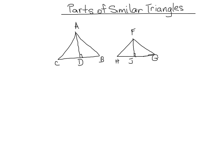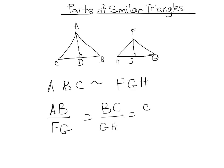So our altitudes are also proportional to the corresponding sides. If triangle ABC is similar to triangle FGH, we already know that AB over FG is equal to BC over GH, which is equal to CA over HF. But what we might not know is this is also equal to AD, which is our altitude of the first triangle over FJ. So that scale factor remains the same throughout, even if we're talking about the altitude.